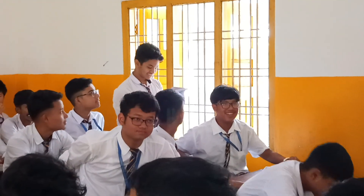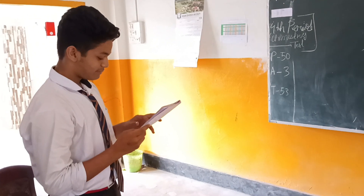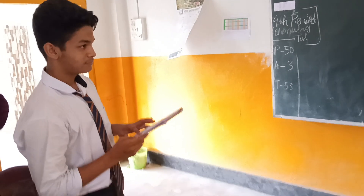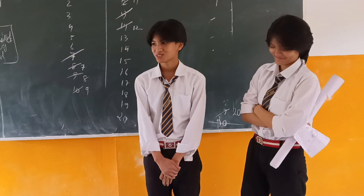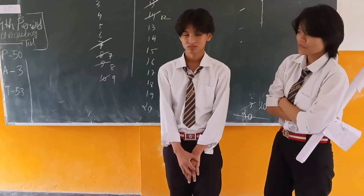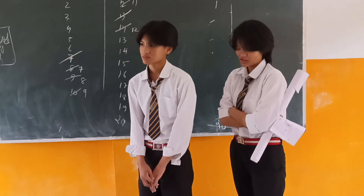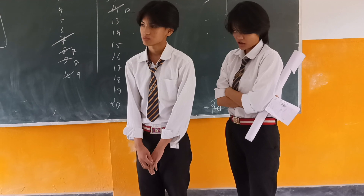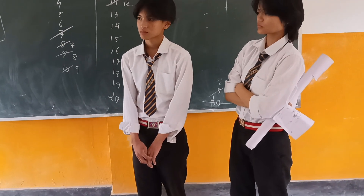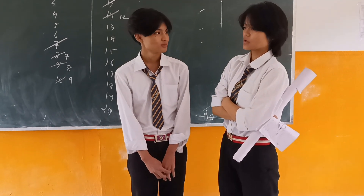What happens to the image distance in the eye when we increase the distance of the object from the eye? The image gets smaller. Listen — the question is about image distance: in the eye, when we increase the object distance from the eye, what happens? Nothing happens to the image distance.